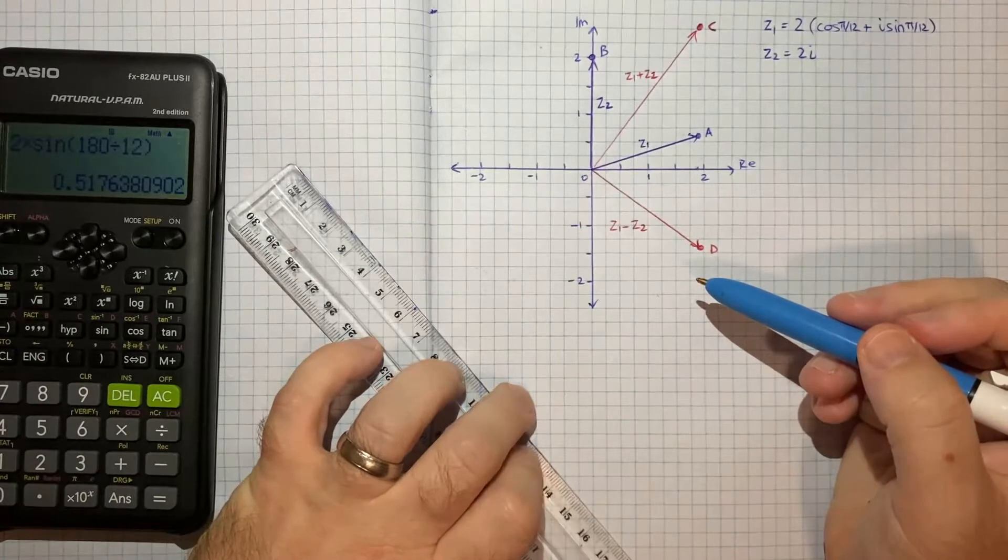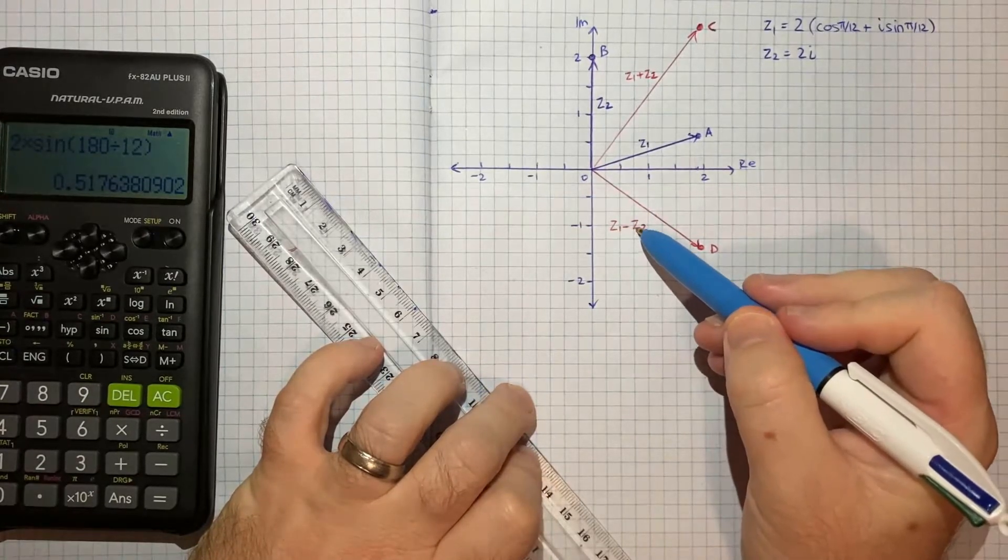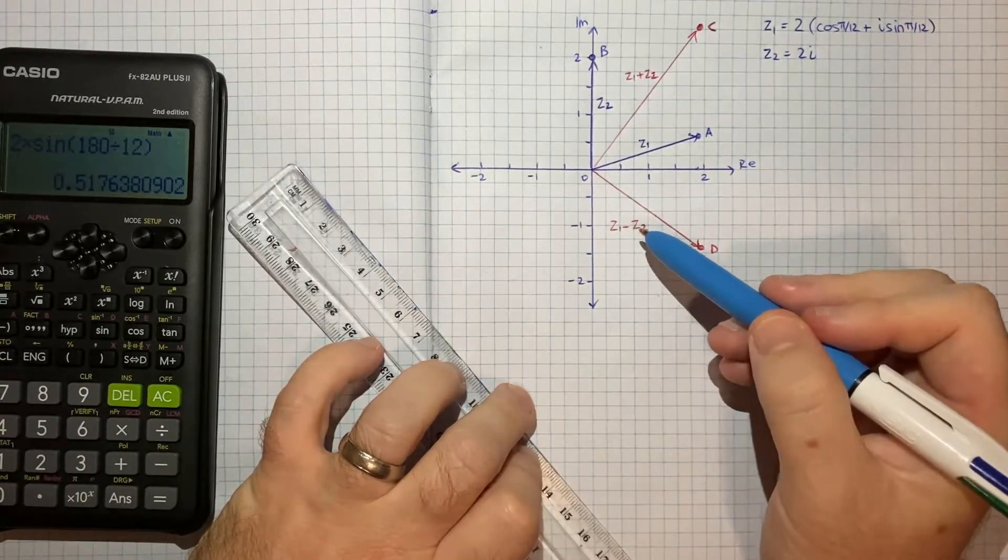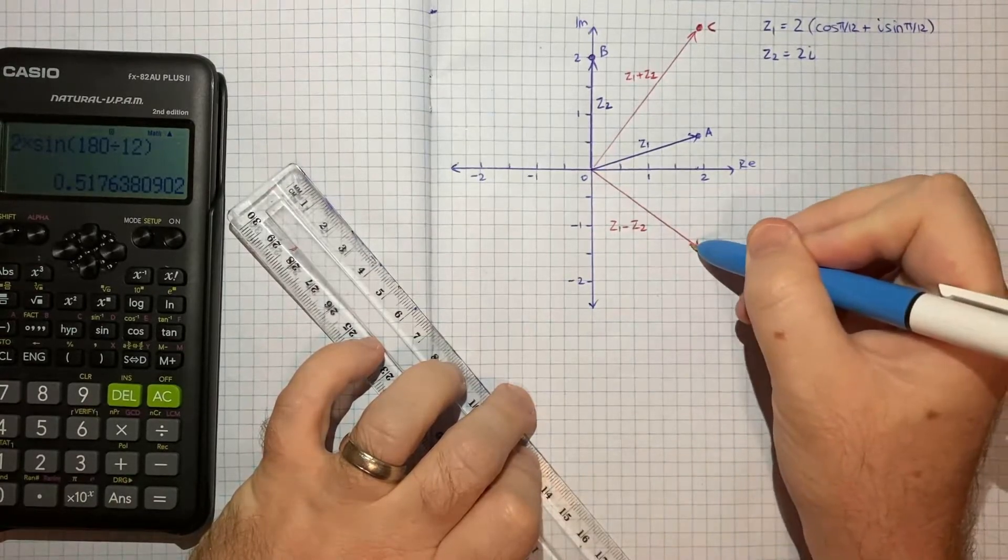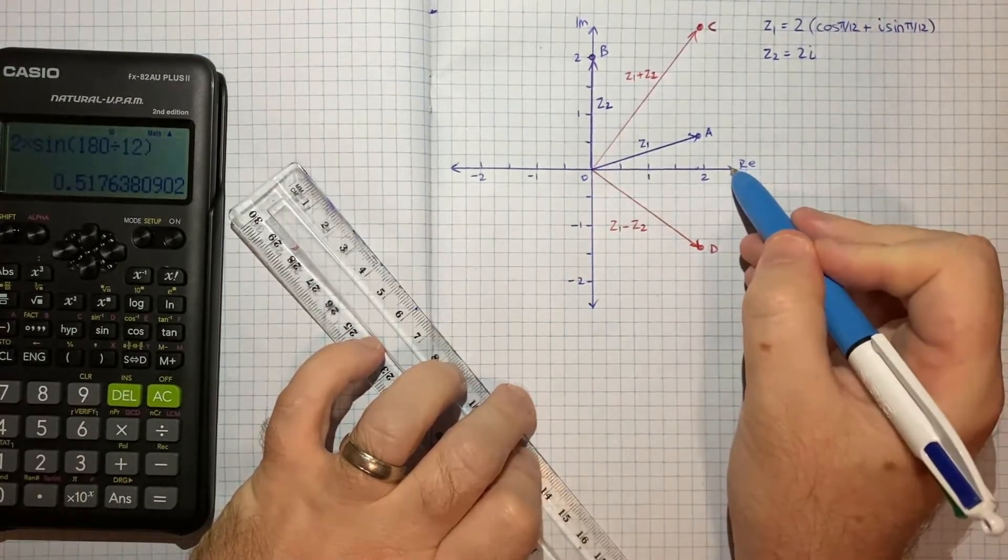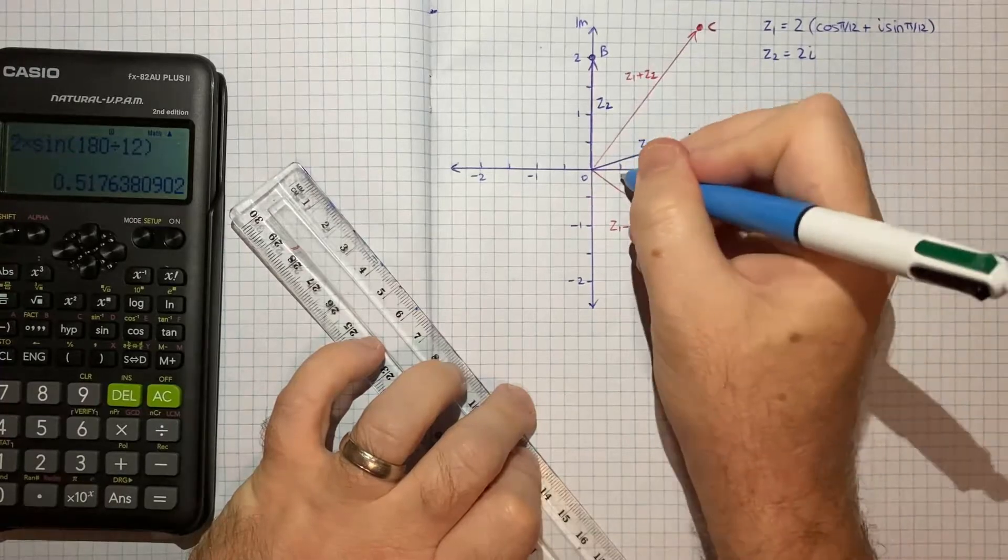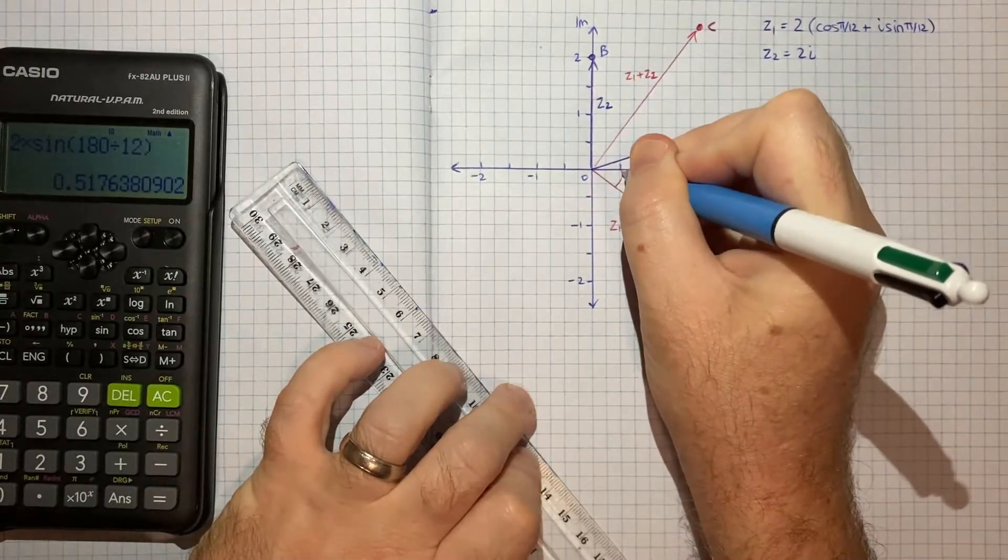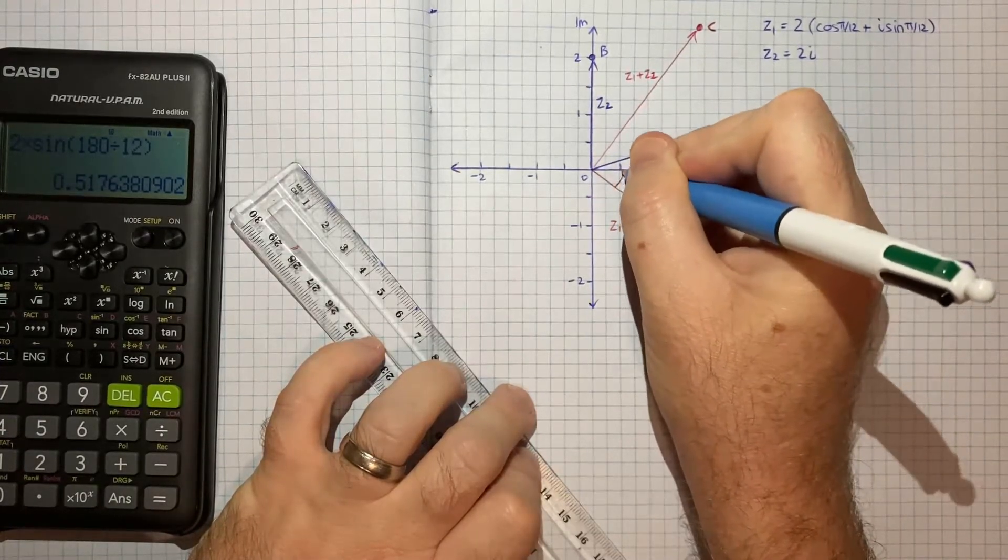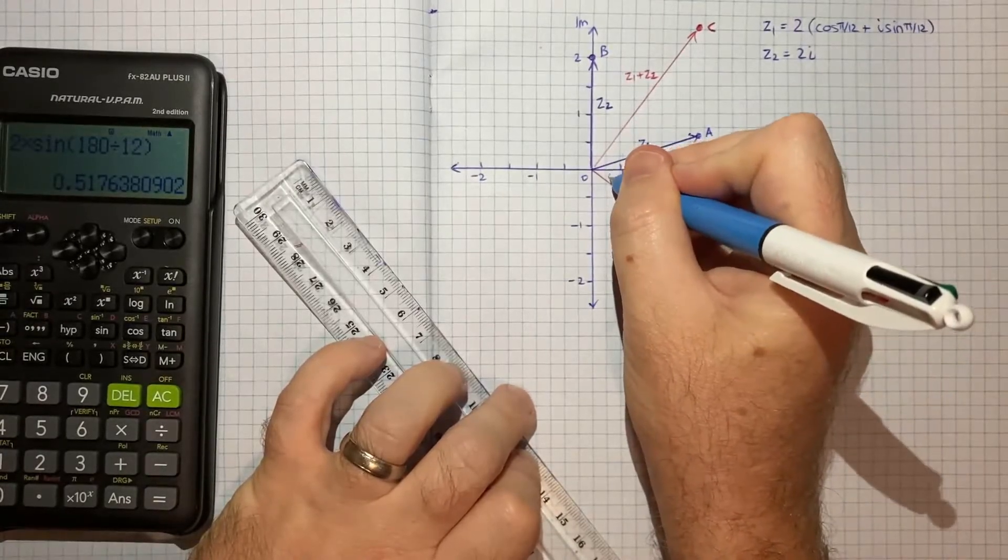Part 3 now wants us to find the argument of z1 minus z2, and that is essentially the angle that this vector makes with the real axis. So because we're in this quadrant here, we're kind of coming this way. So we're really concerned with this angle here, which I'll call theta.